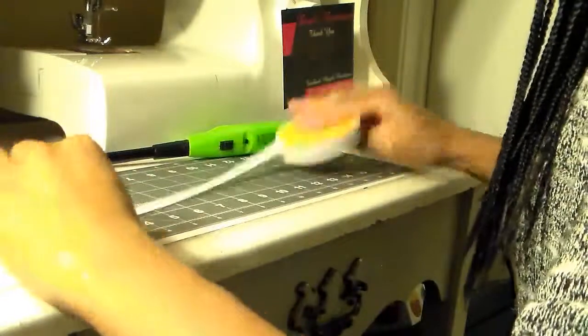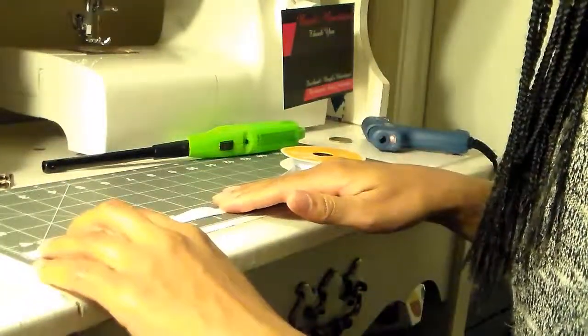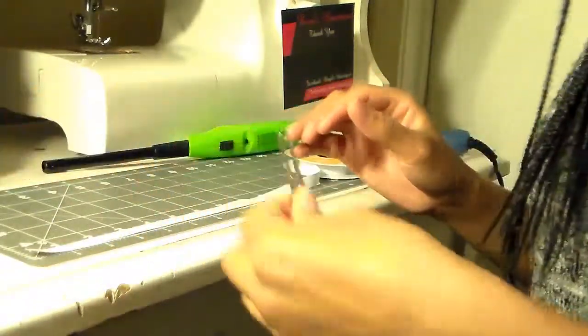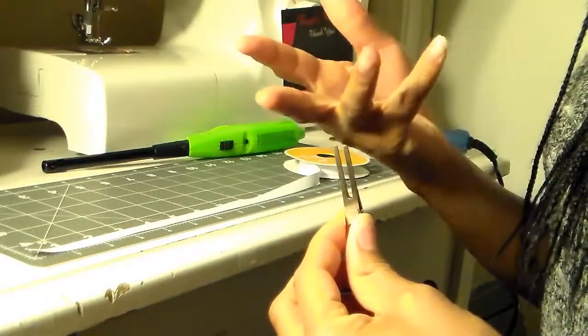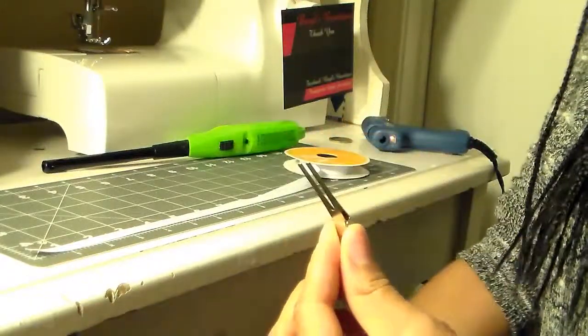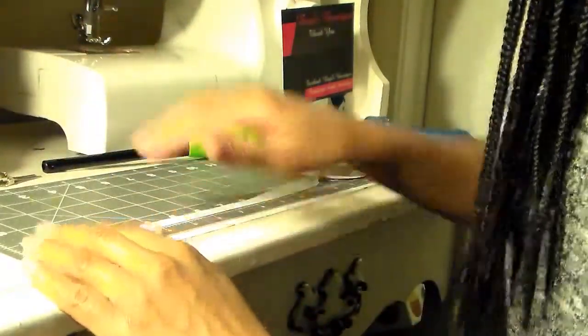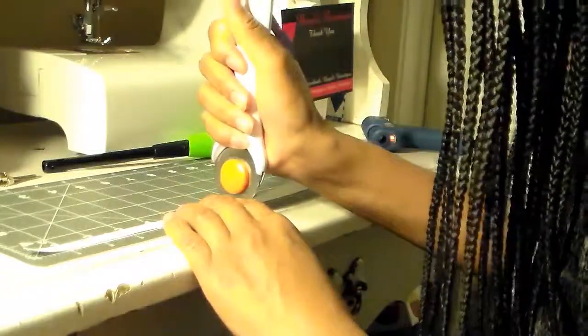First you want to measure your ribbon out to 7 inches for this particular hair clip. I call it square, I guess it's just a square alligator clip is what I call it. But for this one you want to measure it out to 7 inches. Cut it.